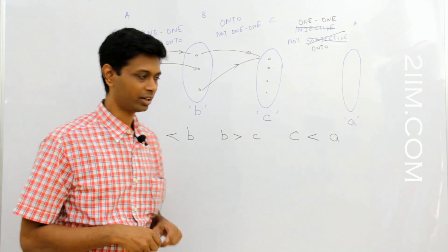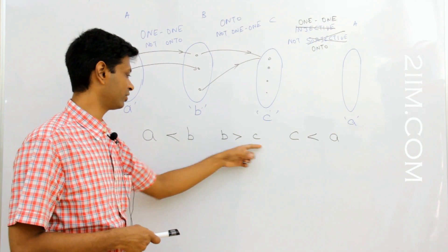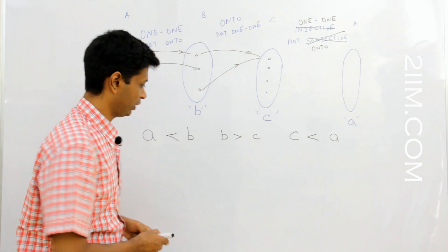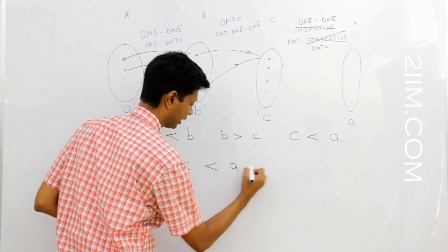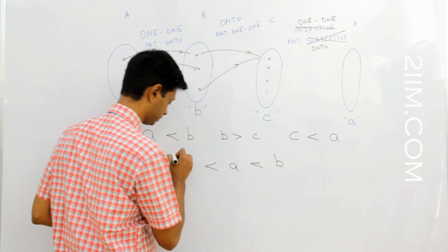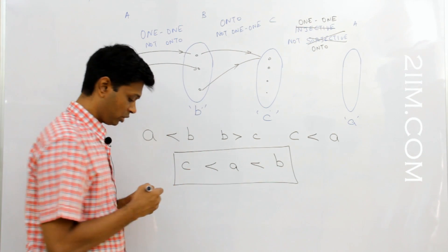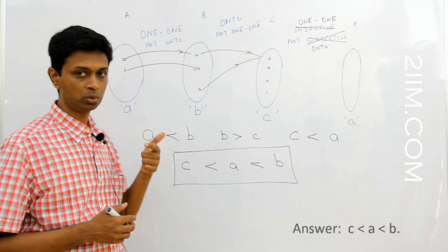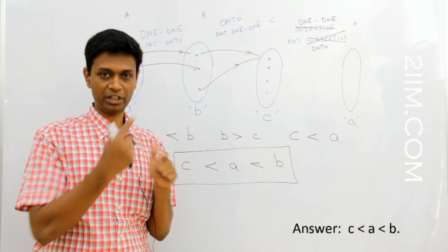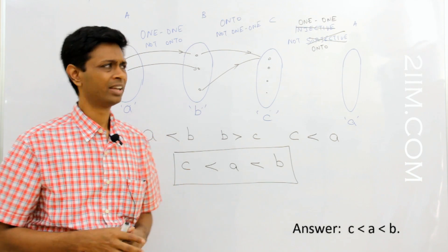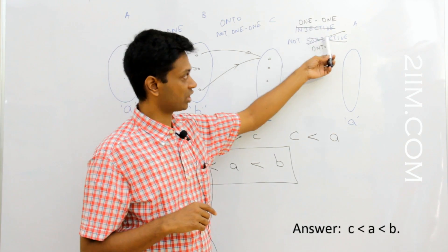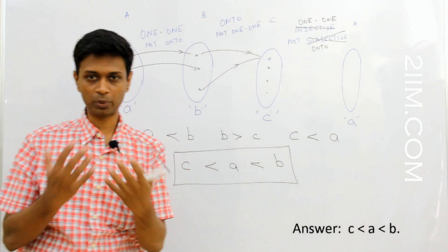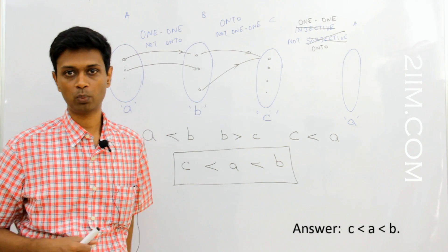Now putting the three things together: we know B is the largest — B is greater than A and B is greater than C. We also know C is less than A. So we have C less than A less than B. This is a very interesting question mainly because it helps us focus on two things: the definitions of 1-to-1 and onto (and their opposites, many-to-1 and into), and the terminology — injective means 1-to-1, surjective means onto. Wonderful question on functions.